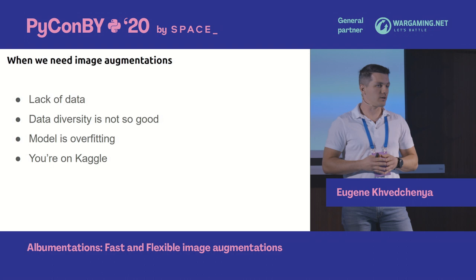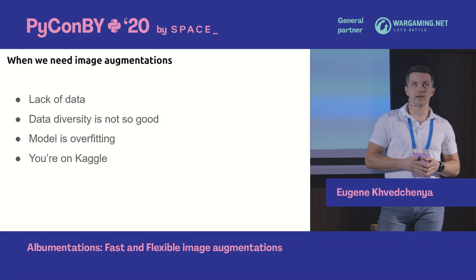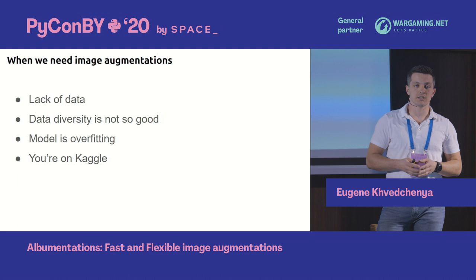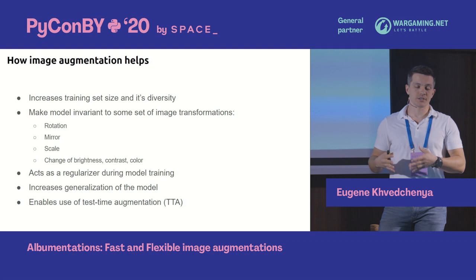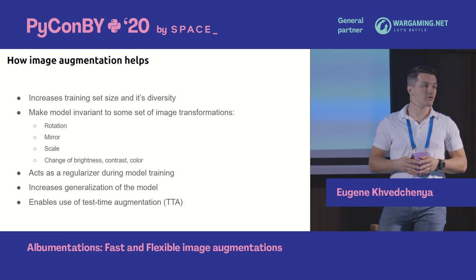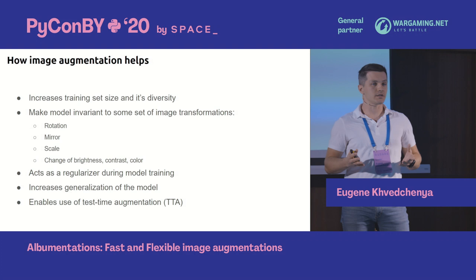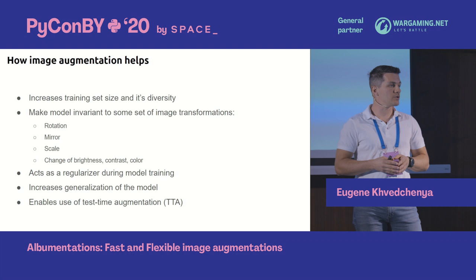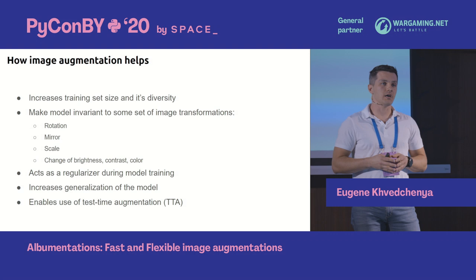Last but not least, if you're competing on Kaggle, you have a limited set of data and quite often it's not allowed to get extra data from elsewhere. Image augmentation is a legal way to increase your training set, helping to artificially generate new samples on the fly while training. By rotating images or flipping them, you make your model invariant to these transformations, which acts as a regularization process during training.